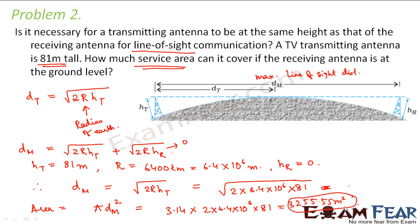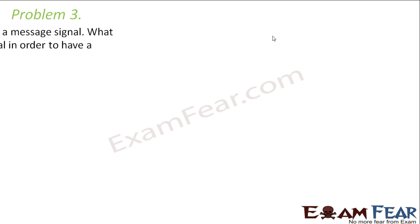So we can say that it is not necessary for a transmitting antenna to be of the same height as that of the receiving antenna for line of sight communication. What matters for line of sight communication is the distance DM between the two. Both antennas do not need to be of the same height. Let us look at the third problem.